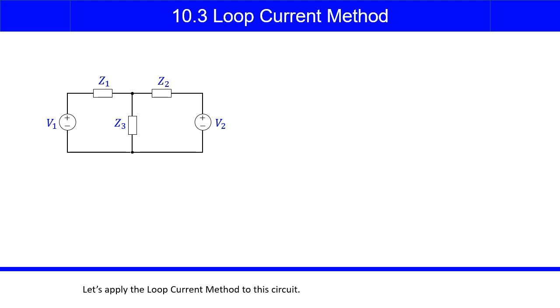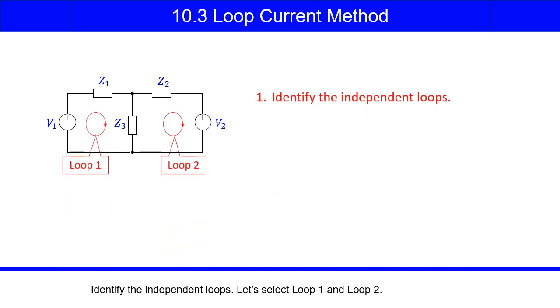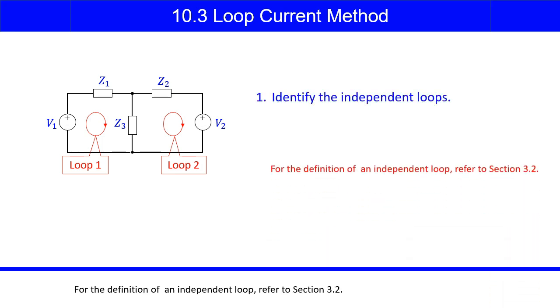Let's apply the loop current method to this circuit. Identify the independent loops. Let's select loop 1 and loop 2. For the definition of an independent loop, refer to section 3.2.